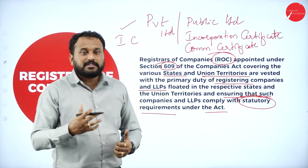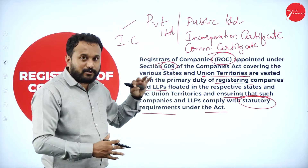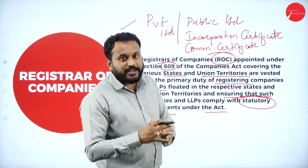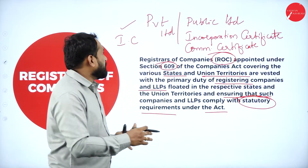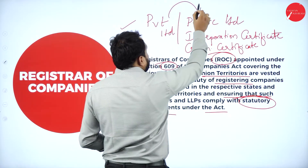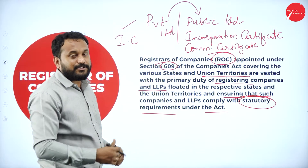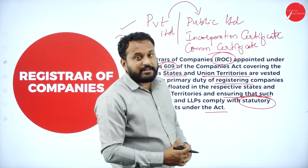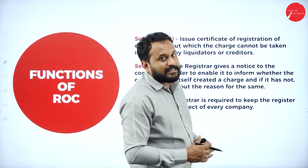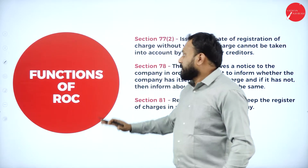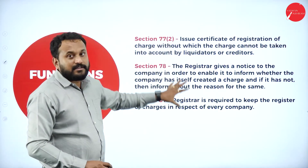For any new business registration, you must go to the Registrar of Companies. Any renewal also requires approaching the ROC. If you want to change the objective in the Memorandum of Association, you must go to the Registrar. Similarly, to convert a private limited company to a public limited company, you must approach the Registrar of Companies. This makes the ROC a statutory body that makes all decisions with respect to the running of a company.